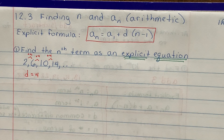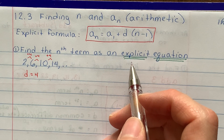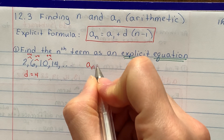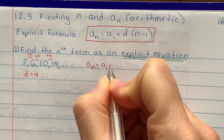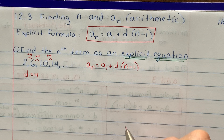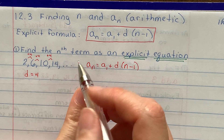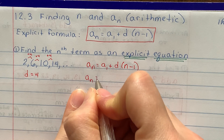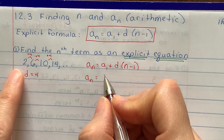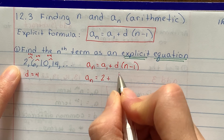I'm going to write that on the side. I'm trying to memorize this formula — there are going to be a lot of formulas in this unit. So I'll start by writing it down: a sub n is equal to a sub 1 plus d times n minus 1. Now I'm going to plug in what I know. They said find the nth term, so I don't know what n is — I'll leave it as a sub n. a sub 1 means the first term, which is 2.